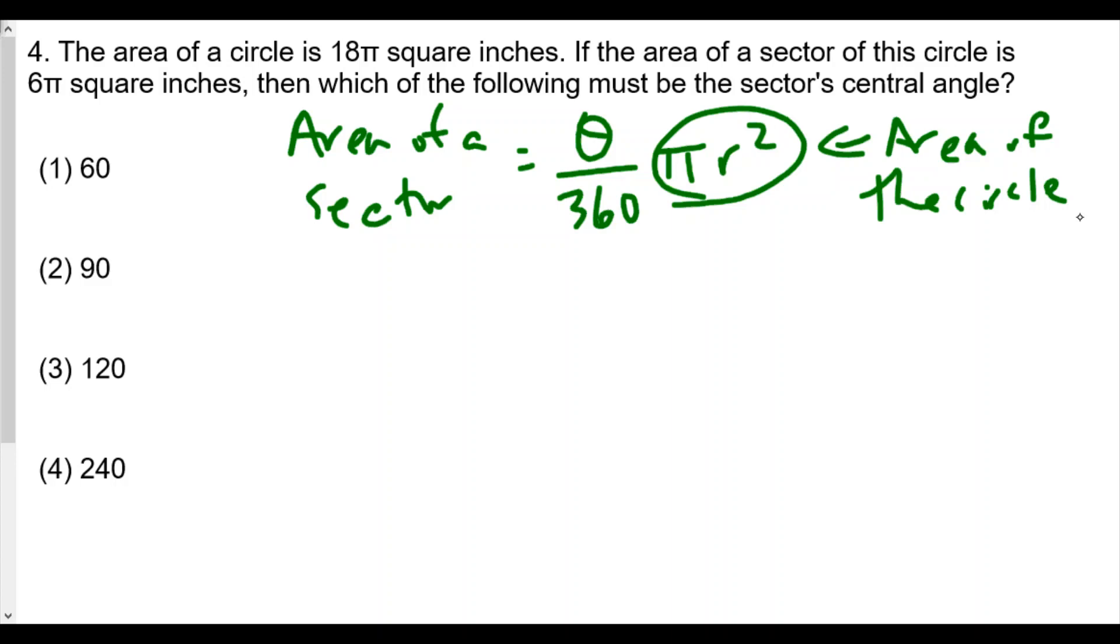And then the area of the sector, we already know that, so we're just filling in information. The information in this case, the area of the sector is 6π equals theta over 360, and the area of the full circle, πr², is going to be, in this case, 18π. So the goal now is to find the measure of theta, the central angle.